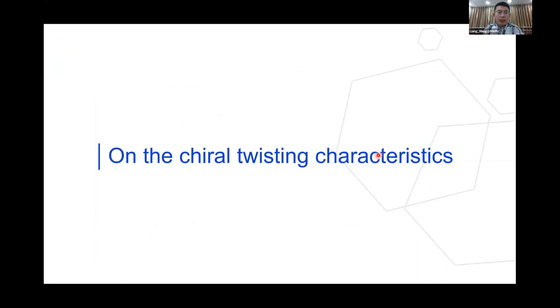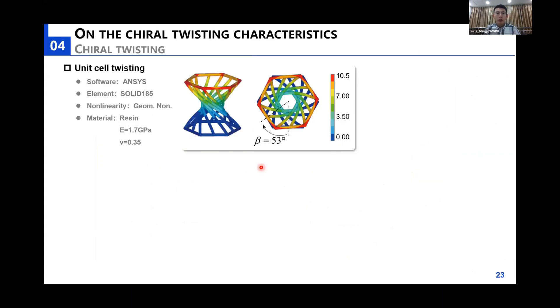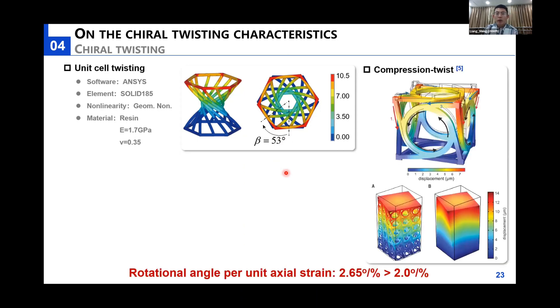In the third part, we continue to investigate the twisting effect of chiral unit cells. Due to this apparent geometric chirality, this cell presents a clockwise twist undergoing a vertical displacement. We have applied a 4 mm displacement along this vertical direction, and we observe that the maximum displacement measured on the structure is over 10 mm, implying that a considerable rotation has occurred. The rotational degree per axial strain is as high as 2.65 degrees, in comparison with 2 degrees reported previously.